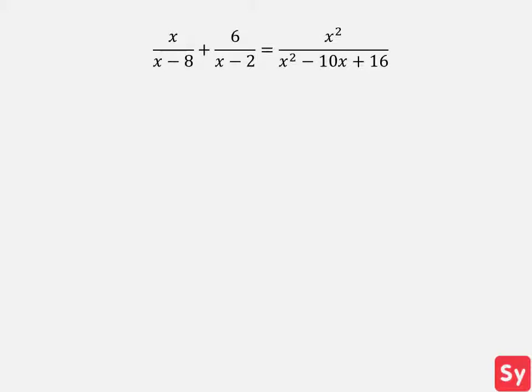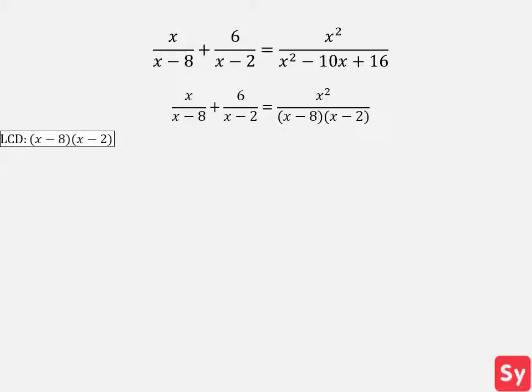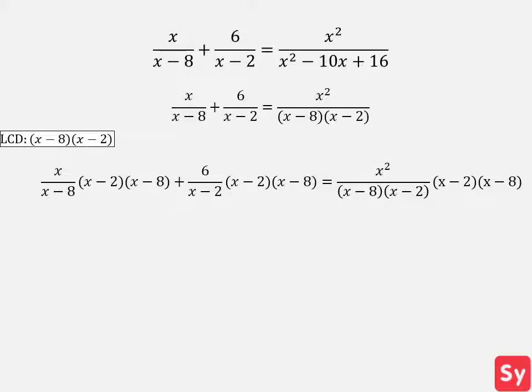Last example, we have x over x minus 8 plus 6 over x minus 2 equals x squared over x squared minus 10x plus 16. First, we factor the denominators. Next, we find the LCD, which is x minus 8 times x minus 2. Now we multiply both sides of the equation by the LCD. This simplifies to x times x minus 2 plus 6 times x minus 8 equals x squared.